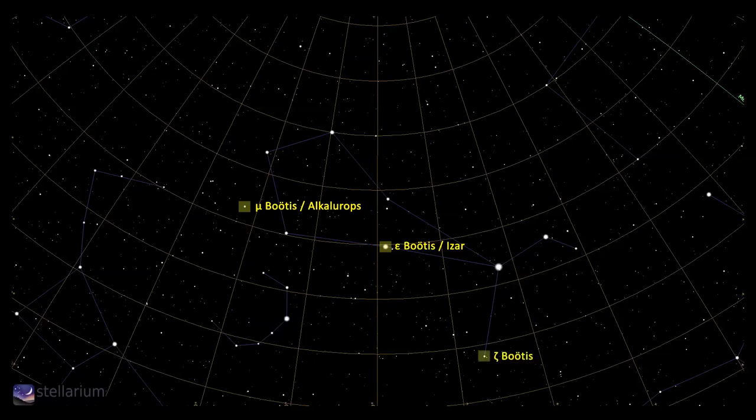Our third multiple for you to split is Zeta Boötis. This is a physical binary combined with an optical companion, giving the appearance of a triple system. The physical binary are separated by 1 arc second and are magnitude 4.5 and 4.6. Meanwhile, the optical companion is separated by 99 arc seconds and is magnitude 10.9.